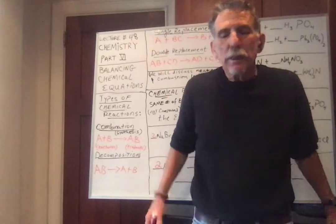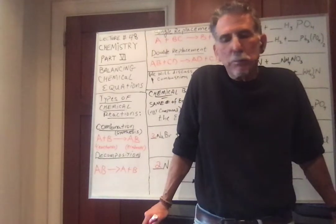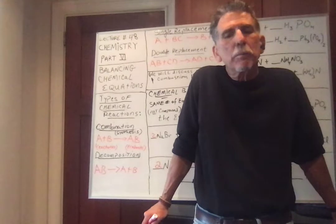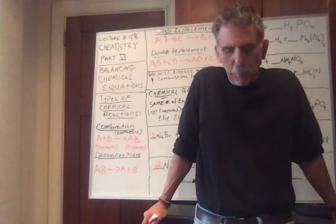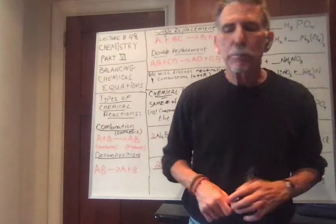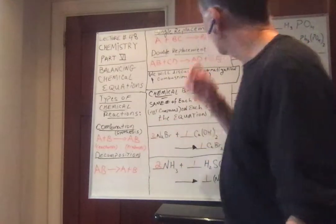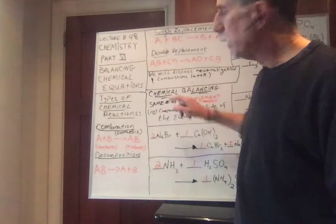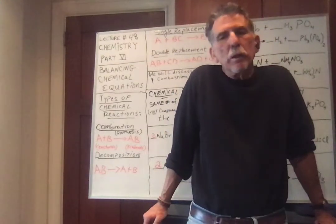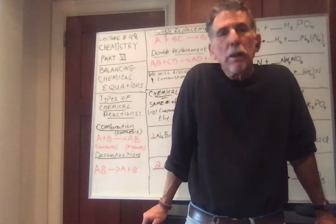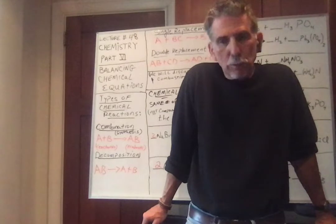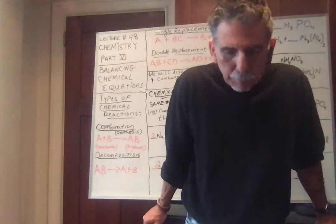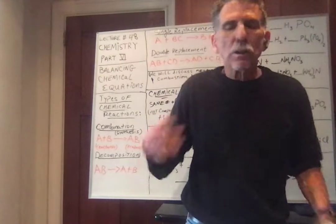Since this is not an in-depth chemistry class, the equations we'll have will be relatively easy. I won't give you coefficients that are 16, 17, or 23. Usually the coefficients will be 1, 2, or 3. The basic idea is that we have the same number of each element — not the compound — on each side of the equation. We need to conserve the element. If we start with 23 sodium atoms, we must finish with 23 sodium atoms.